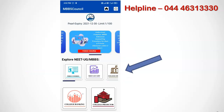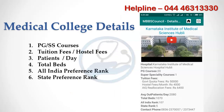Install the MBBS Council app from the Google Play Store if you have not installed it, and click the college details image under the Explore UG section. You will be asked to select a state and college for which you need the required details. After selection, you will see important information about the selected medical college.